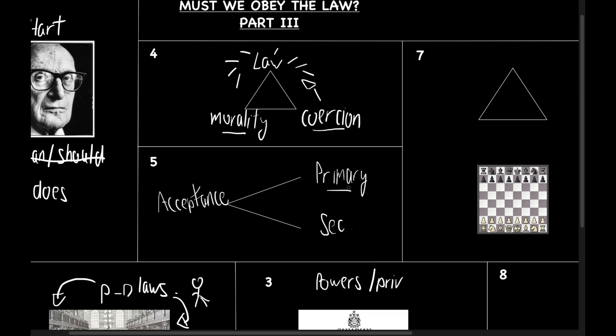Primary rules of obligation are the rules that regulate behavior directly. Citizens are bound by these rules not because the state will punish them if they do not comply, as Austin claims, but because citizens consent to being bound by the law.